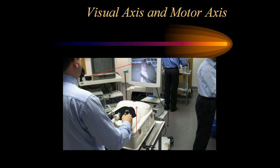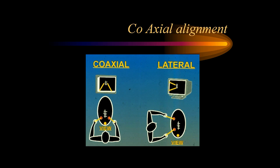In that situation, as shown in this picture where the surgeon is practicing with a lab trainer, if his optical axis and his motor axis — his right and left working hands — are all in line, that is what we call coaxial alignment. In that situation, the surgery or procedure becomes very easy to master. Coaxial alignment, wherein the optical and motor axis are in line, is always better rather than lateral alignment.